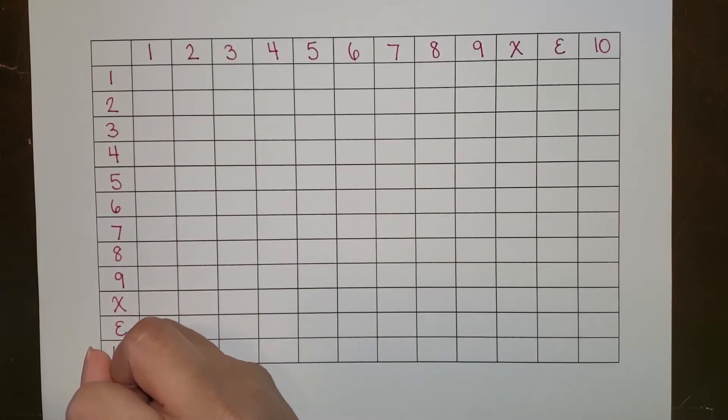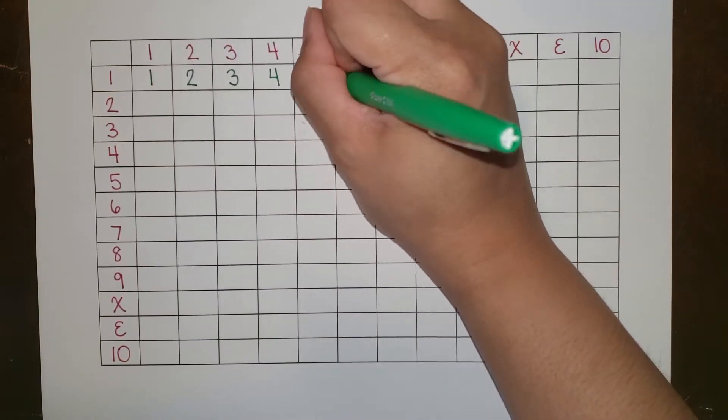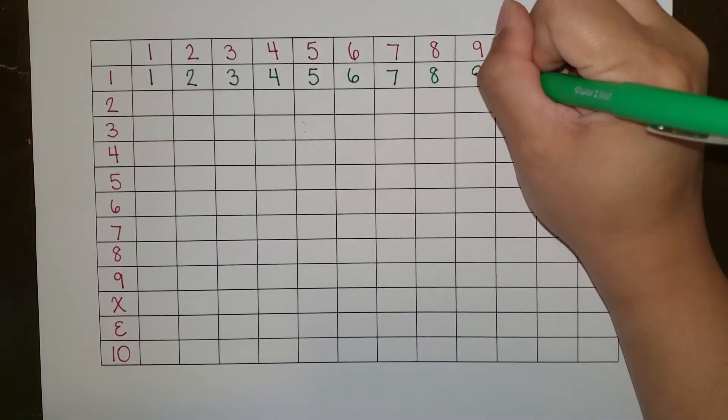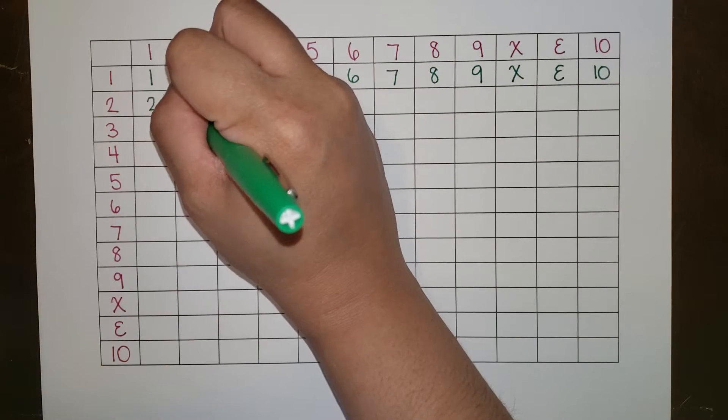So I'm going to try to run through this table in a manner that is the easiest to learn, starting with the ones. One times any number equals that number, so we can quickly fill in this column. And if you look, we've already done every even number, so that's the first six multiples of two.